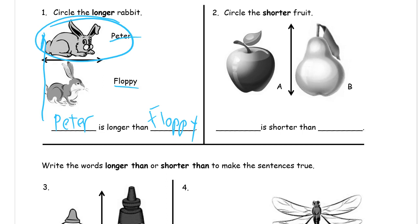Circle the shorter fruit and you can see their endpoints are matched up here. We're looking at shorter is up and down. The apple looks like it's shorter. So we're going to write A. A is shorter than B. We don't have to write apple and pear.